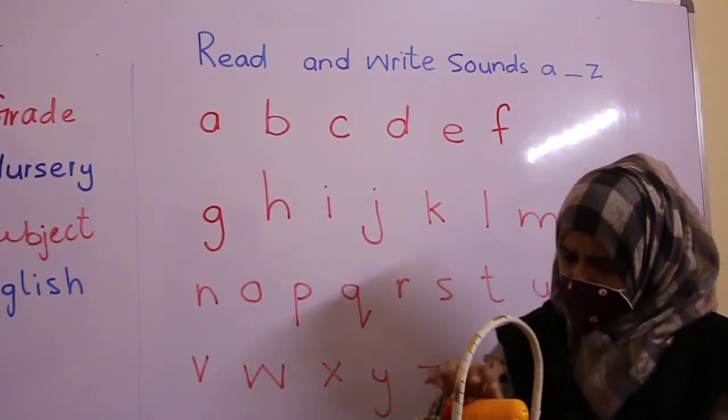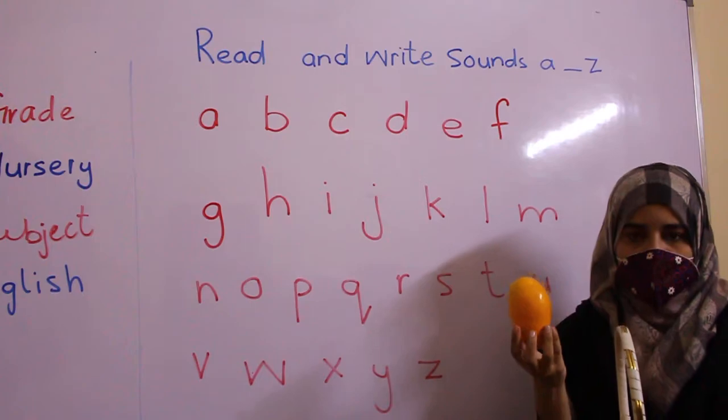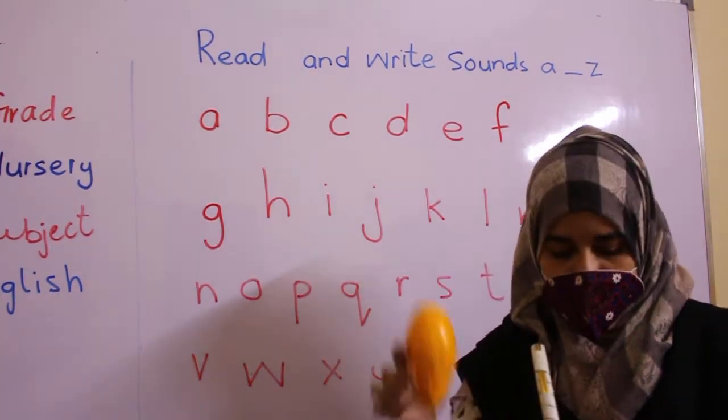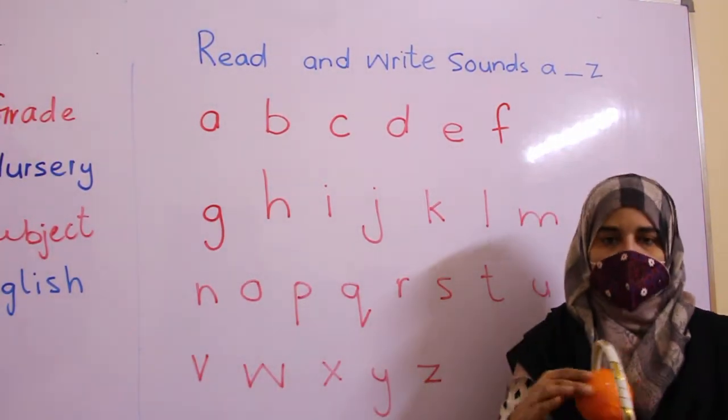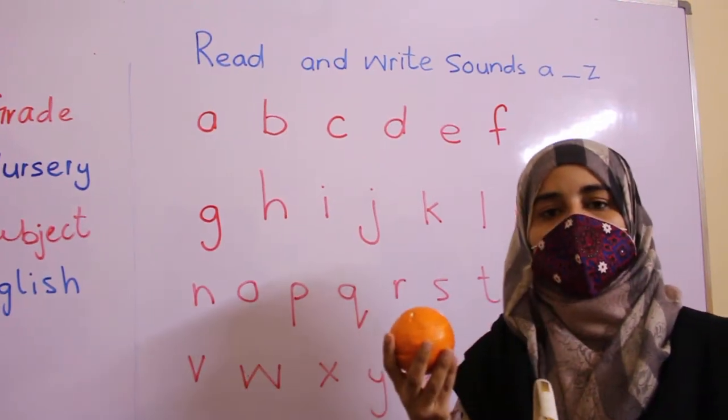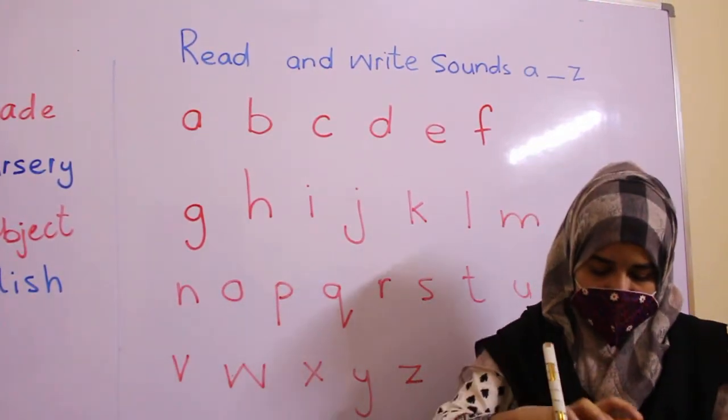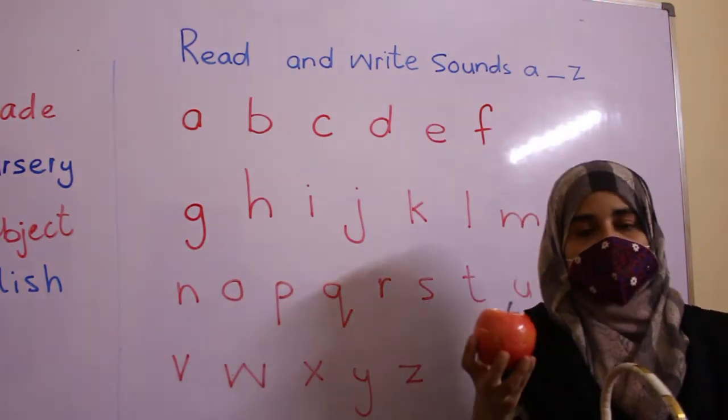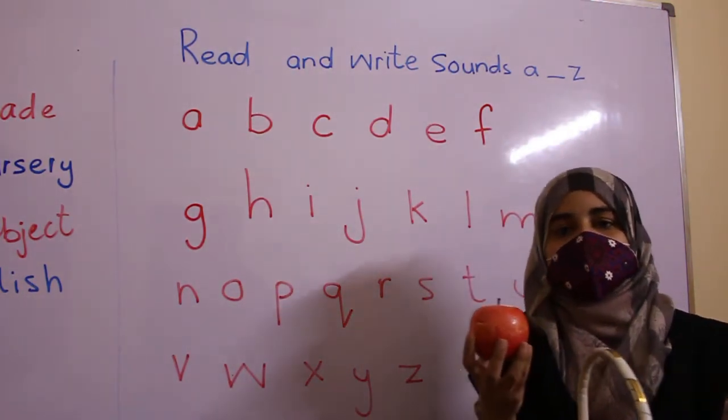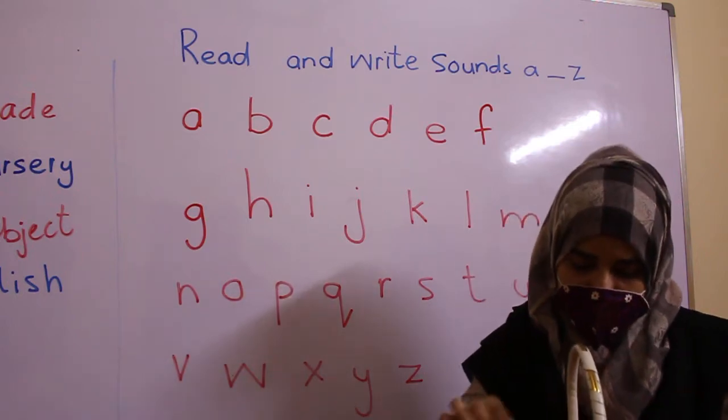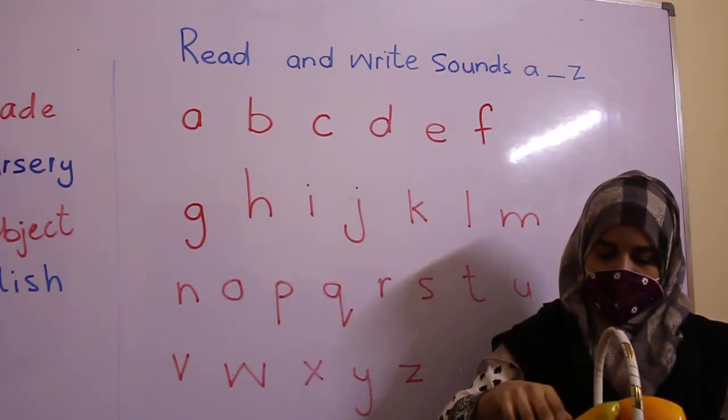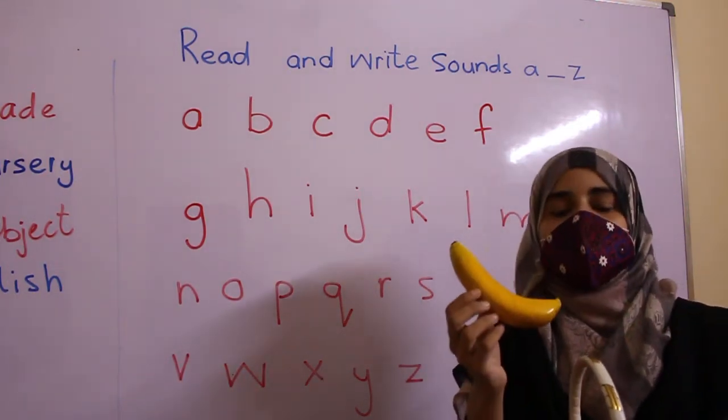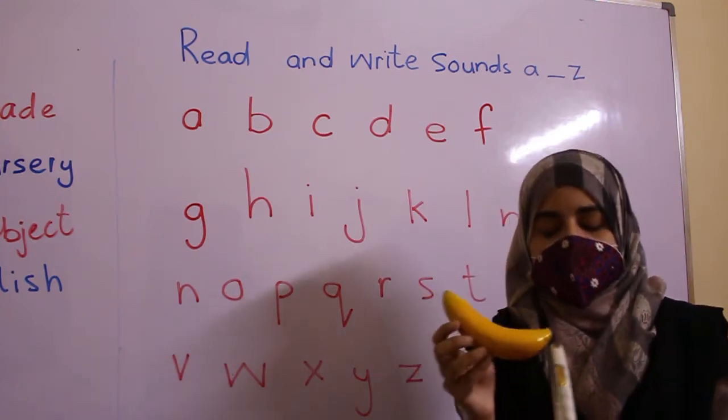So this is mango. The color of mango is yellow. Orange. The color of orange is also orange. This is apple. The color of apple is red. And this is banana. The color of banana is yellow.